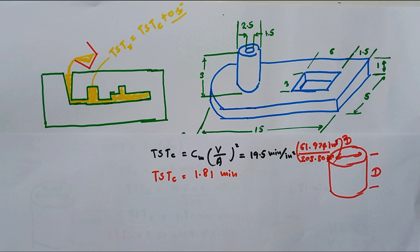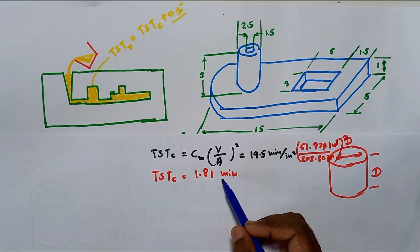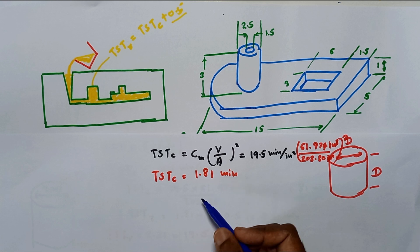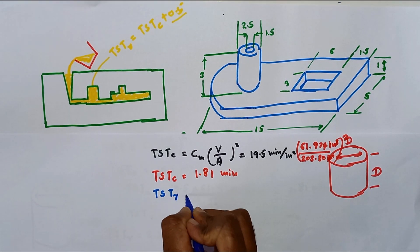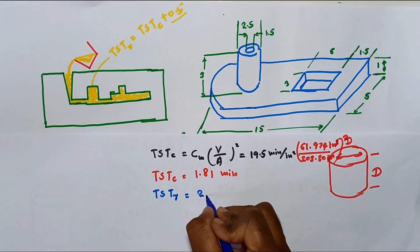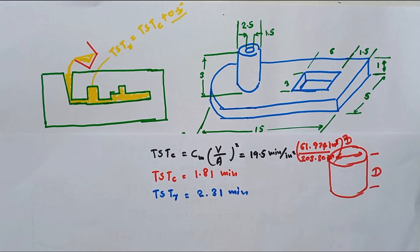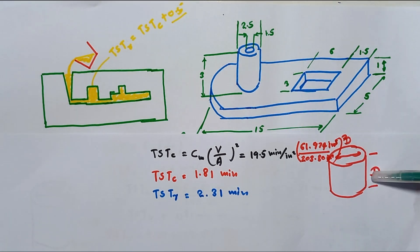So what should be the riser solidification time? If the casting solidification time is 1.81 minutes, the riser should have 0.5 minutes greater than this value. That means the total solidification time of the riser should be 2.31 minutes. In that way, we have to determine the dimension D.